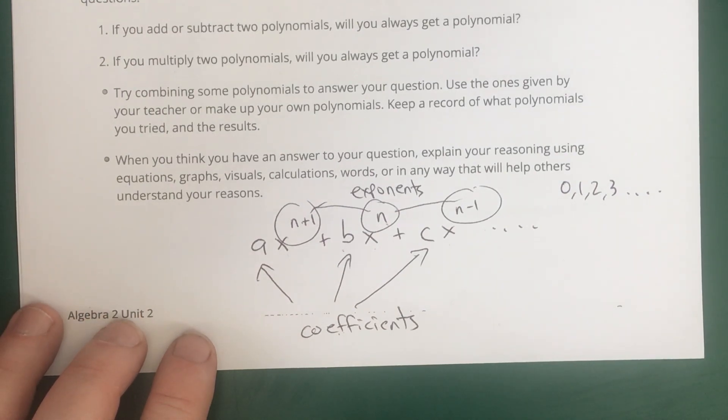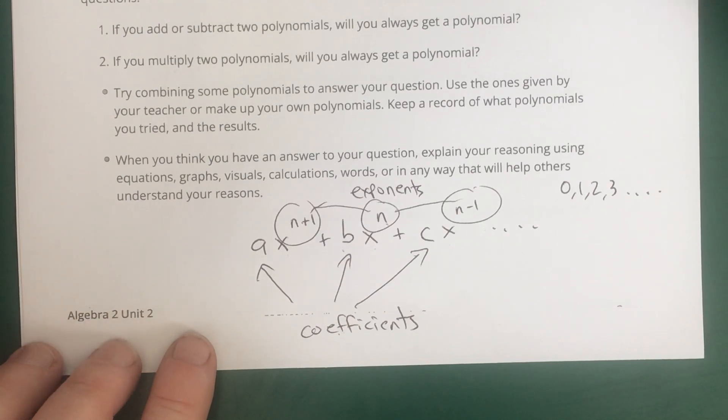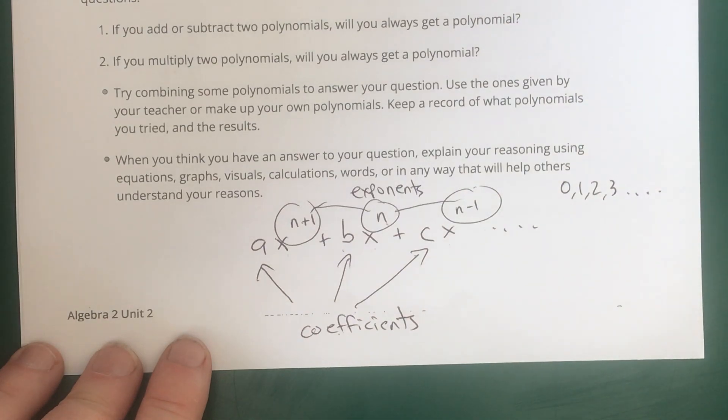The same thing works for subtraction. If you have a bunch of oranges and you take away some of those oranges, you're still only going to have whole oranges. If you only took away whole oranges, you're not going to get any half oranges. There's no way you can subtract and get half an orange. So subtraction also works.